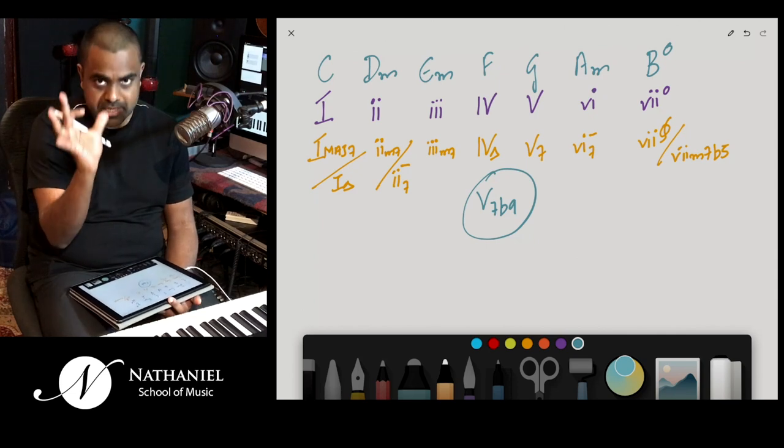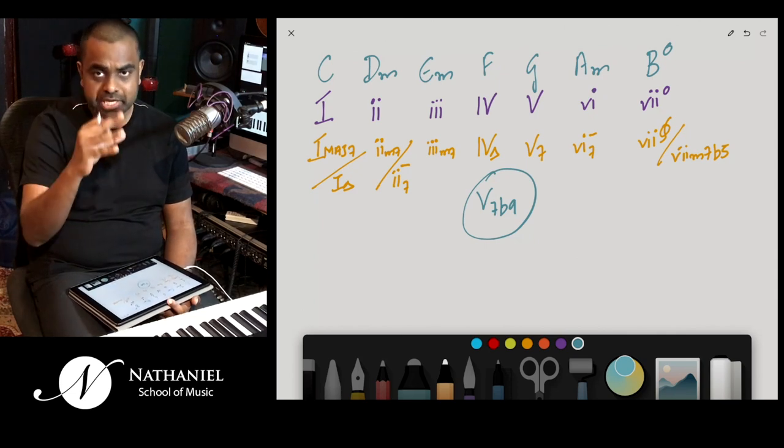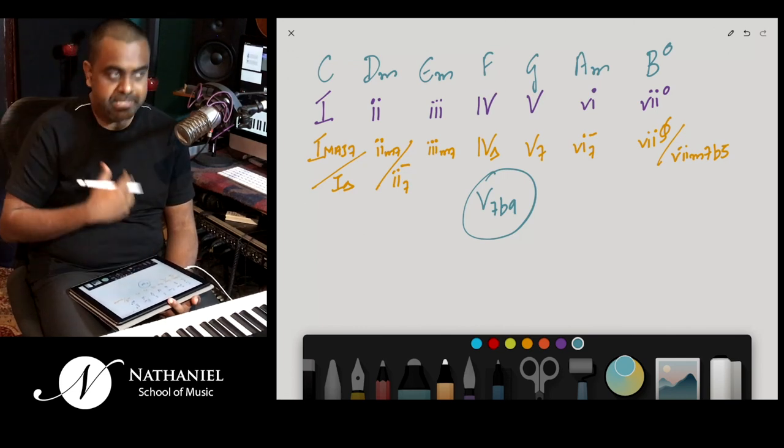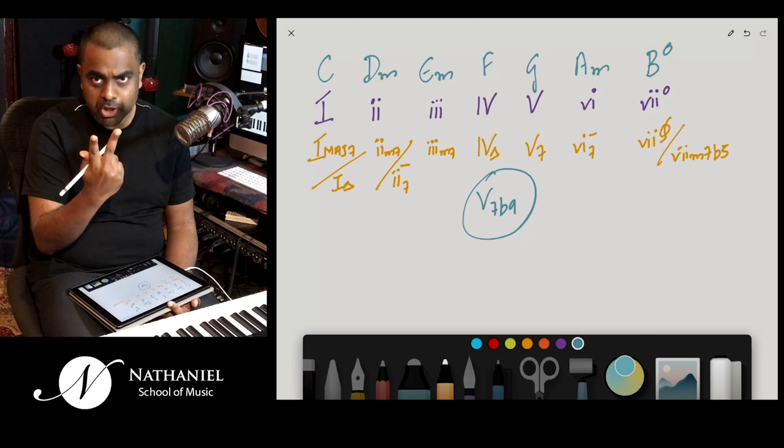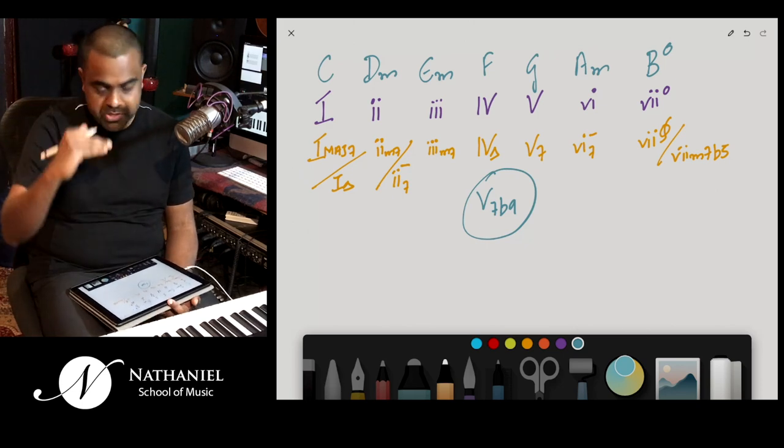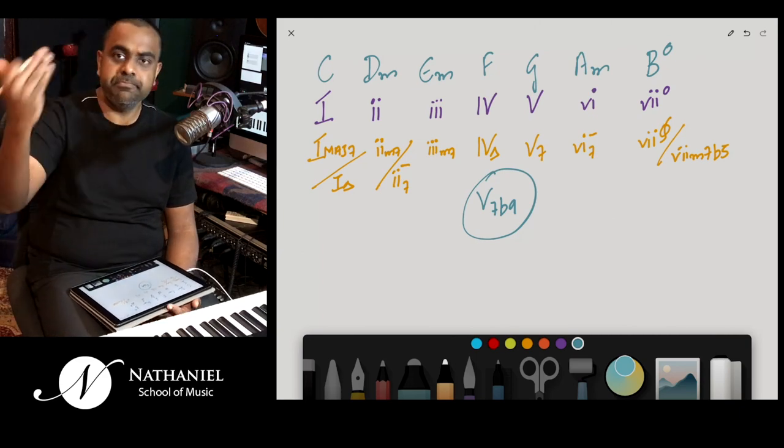Let's recap. Major scale, 7 chords. Big 1, big 4, big 5. Why? Major chords. Big Roman 1, big Roman 4, big Roman 5. Minor chords. Small 2, small 3, small 6. Because it's minor, so small Roman. Then you have your diminished chord, which is 7. So let's move on.